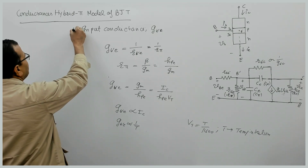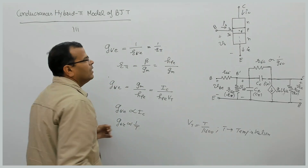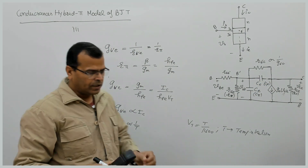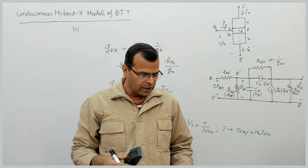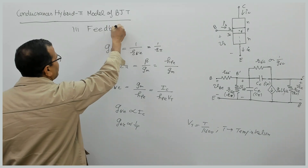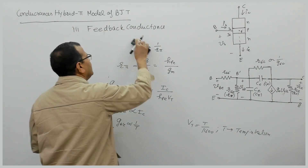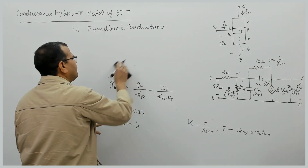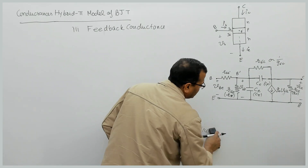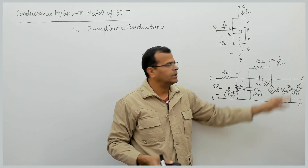The third conductance of the hybrid pi model is feedback conductance — the conductance between B dash and C. We call this feedback conductance. Let us see how to find it. The feedback conductance is between B dash and the collector terminal — that is GB dash C.